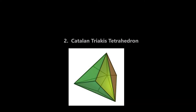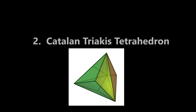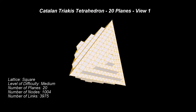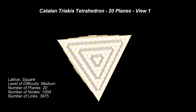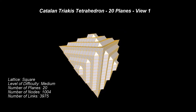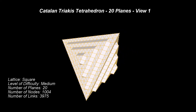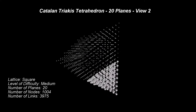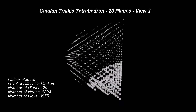Let's look now at the second such structure, namely the Catalan Triakis Tetrahedron. The Catalan solids are named for the Belgian mathematician Eugène Catalan, who discovered them in 1865. We will present two manifestations of the Catalan pattern in CPS — a small one first, and a more developed one second.